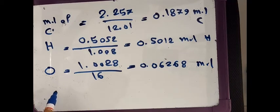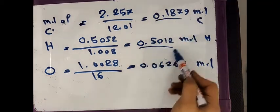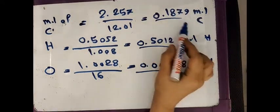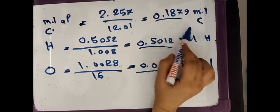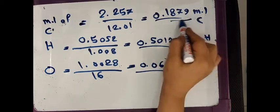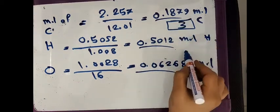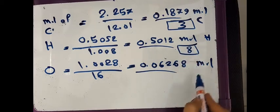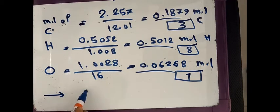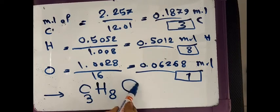Now divide each by the smallest value (0.06268) to find the mole ratio. Carbon: 0.1879 ÷ 0.06268 = 3. Hydrogen: 0.512 ÷ 0.06268 = 8. Oxygen: 0.06268 ÷ 0.06268 = 1. Since the subscript 1 is not written, the empirical formula is C₃H₈O.